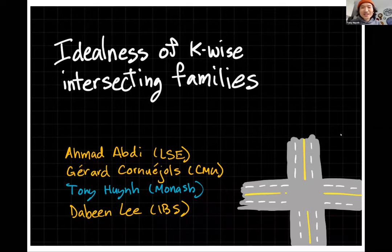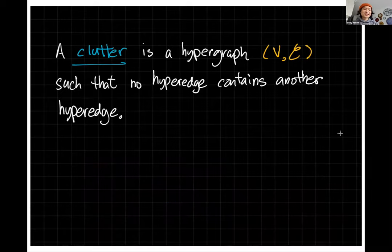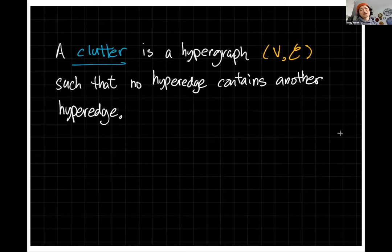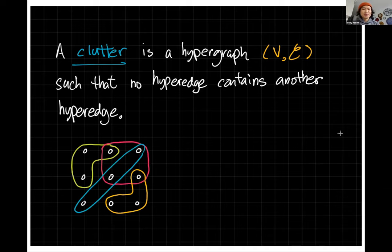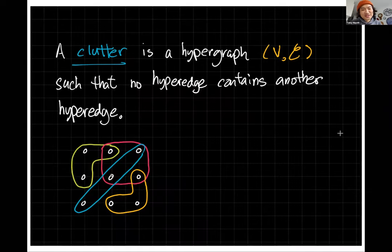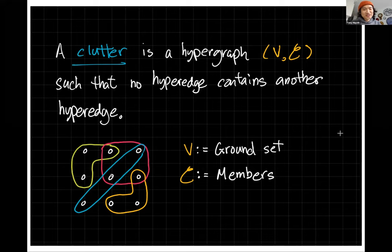The main object in this talk is a clutter. A clutter is a special type of hypergraph where no hyperedge is contained in another hyperedge. Here is an example: a hyperedge on nine vertices where none of the hyperedges is contained in another. The set of vertices is called the ground set, and the hyperedges are called members.